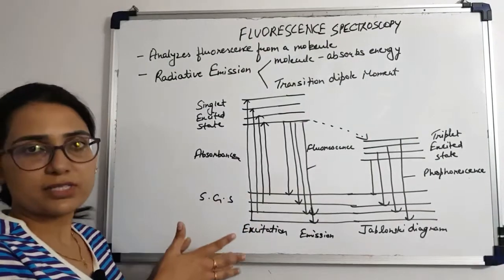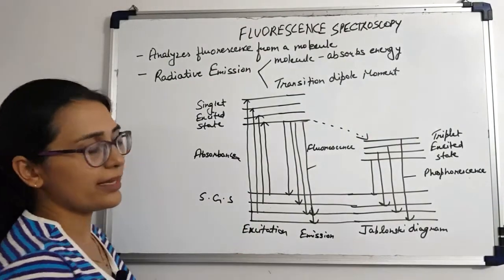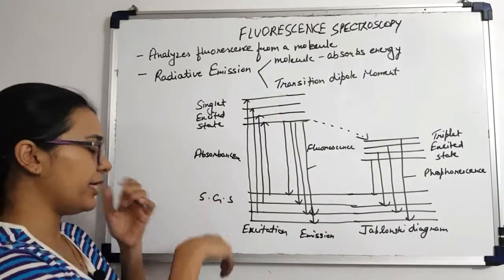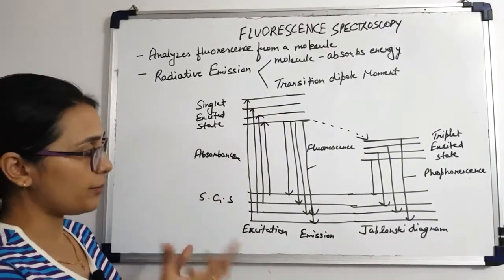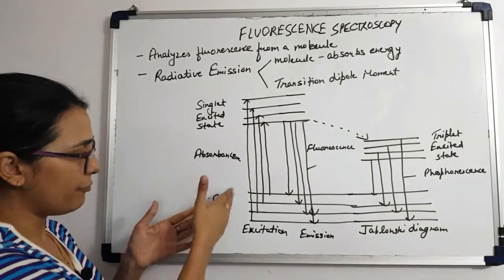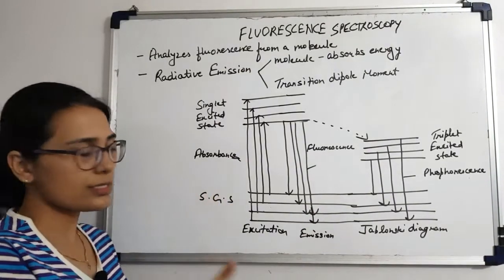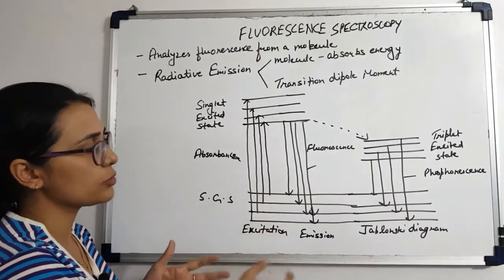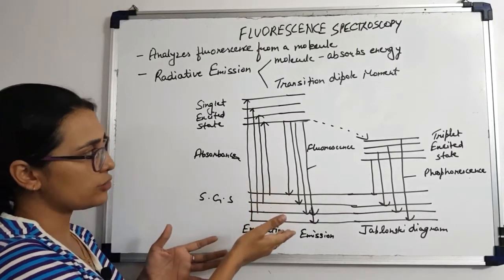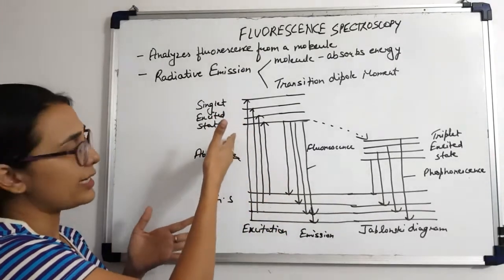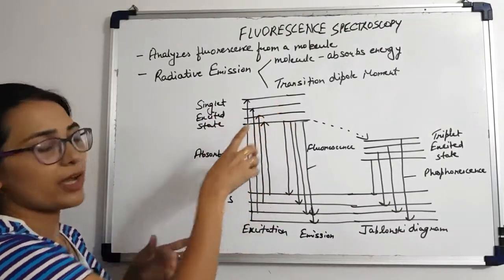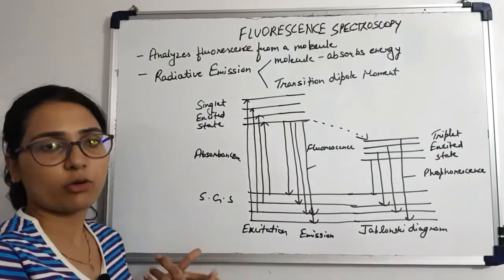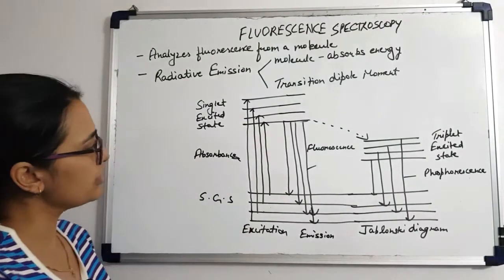Let's look at this principle in detail using the Jablonski diagram, which explains the movement of electrons between different electronic and vibrational states. Every electronic state also has different vibrational states. So the ground state is going to have certain vibrational states, and the excited electronic state also has vibrational states. It is only in the case of molecules — atoms only have electronic states, they do not have vibrational states.